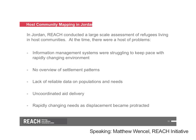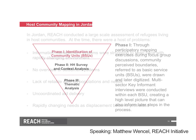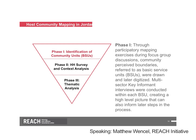Moving on to a completely different context, I'd like to talk about our host community mapping experience in Jordan. We conducted a large-scale assessment of refugees living in host communities in the northern five governorates. At that time there were a host of problems: information management systems were struggling to keep pace with a rapidly changing environment, there was no overview of settlement patterns, there was a complete lack of reliable data on populations and needs, aid delivery was chaotic, and the situation was changing rapidly as it became clear it would be a protracted displacement. We used a three-phase approach to increase the resolution over time. In the first phase, we went through a participatory mapping exercise meeting with community members to identify community-perceived boundaries. These were hand-drawn on reference maps and later digitized, paired with key informant interviews attributed to what we called BSU — basic service unit — boundaries.